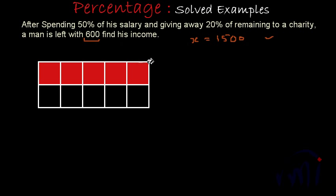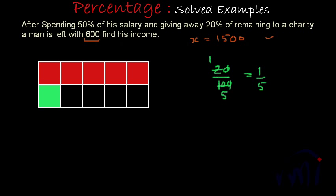Next, he is giving away 20% of the remaining salary — 20% of the lower portion colored in black — to charity. 20% is actually 1 by 5, because 20 by 100 simplifies to 1 by 5. The lower part is already divided into 5 parts, so 1 fifth of that equals 1 block. The red portion is his monthly expenses, the next block is charity, and what remains is what he is left with.